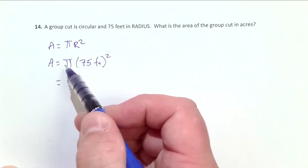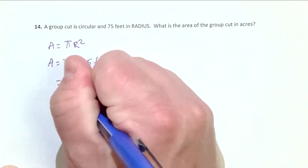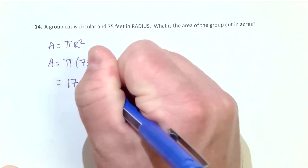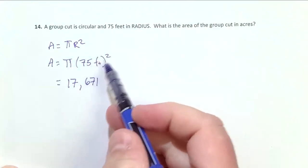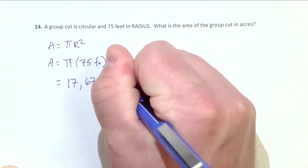Then multiply it by pi. When you do this we get 17,671, and our units you can see are square feet, so they're going to be feet squared.